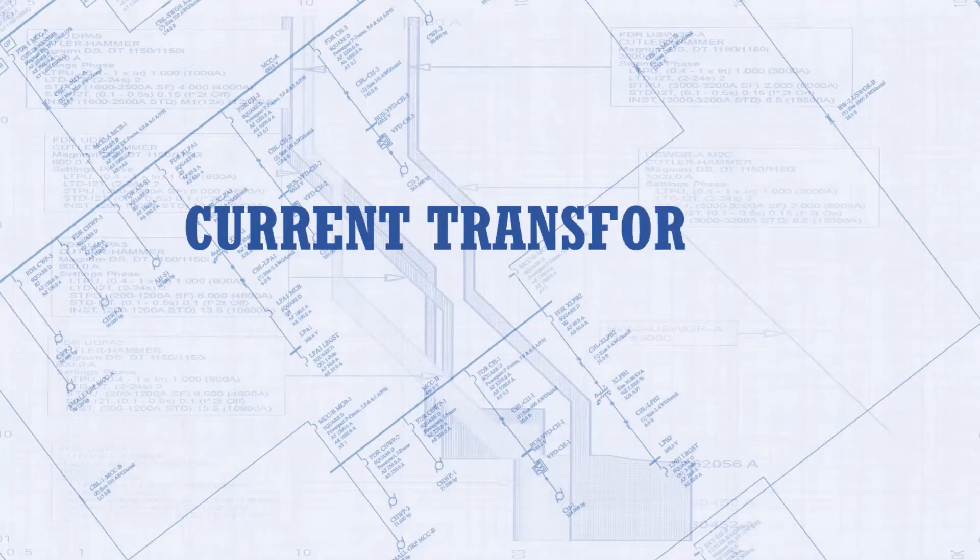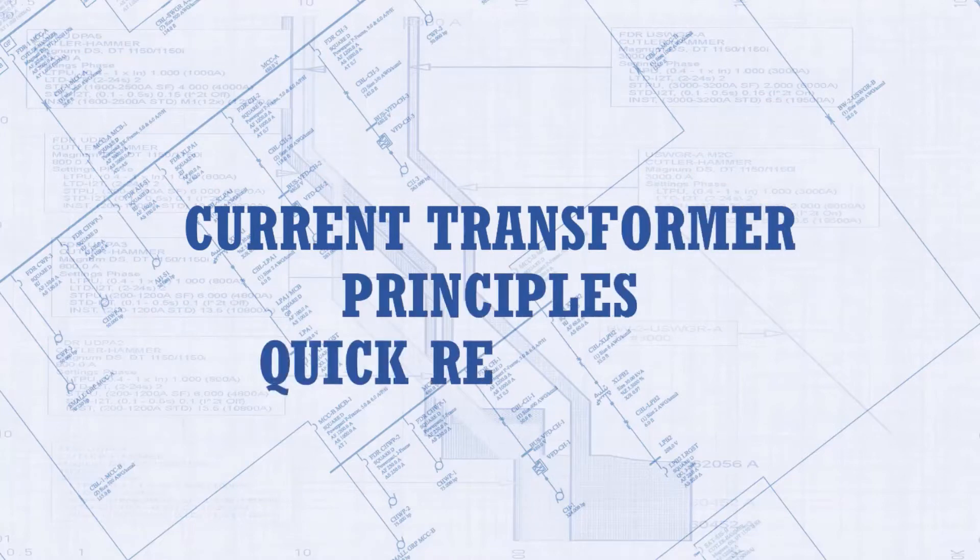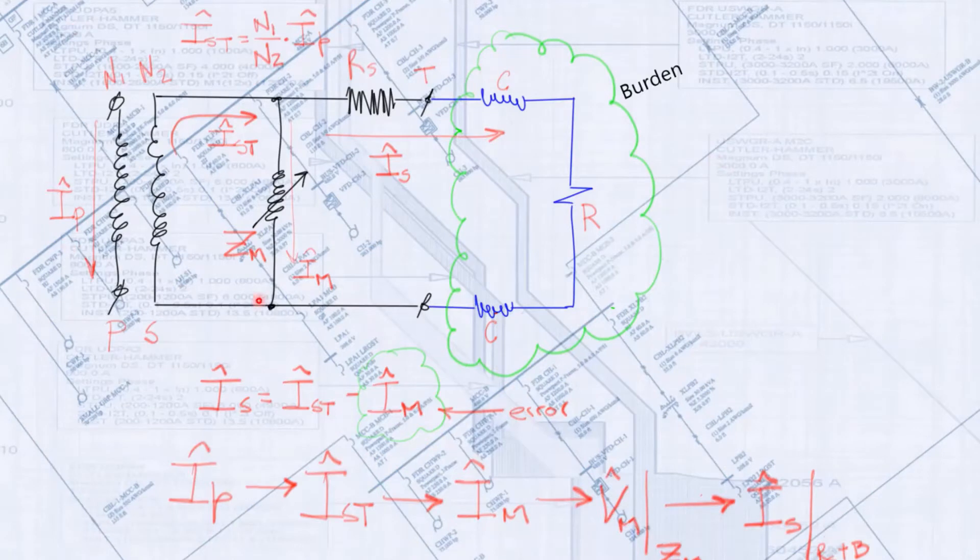First, a quick refresher on current transformer principles of operation. This is the basic steady-state equivalent circuit of a CT. A primary winding and current, the secondary winding and total secondary current, the CT ratio relating primary and ideal secondary currents, and the magnetizing impedance of the CT which defines a saturation characteristic.